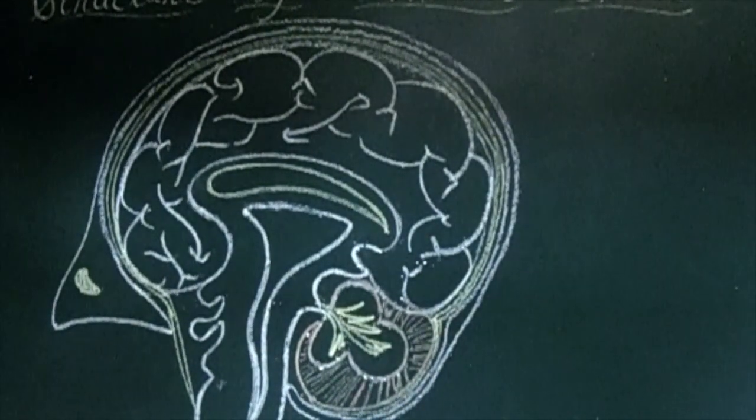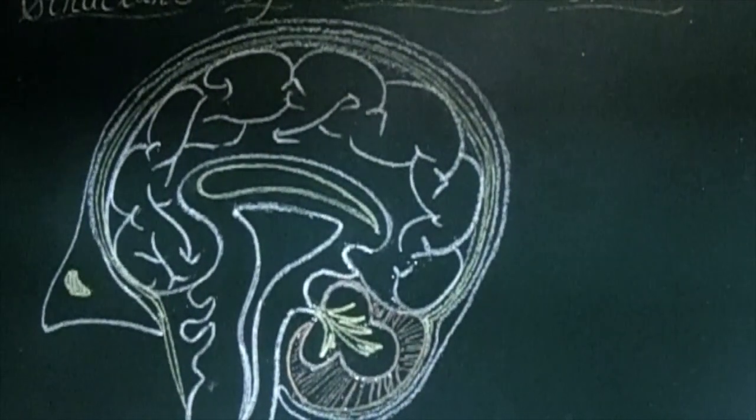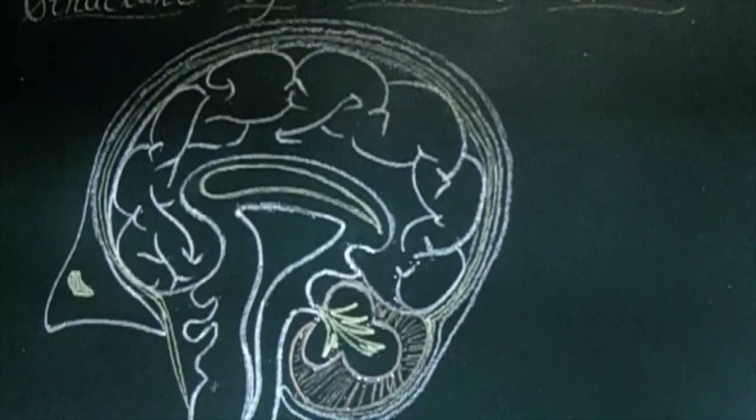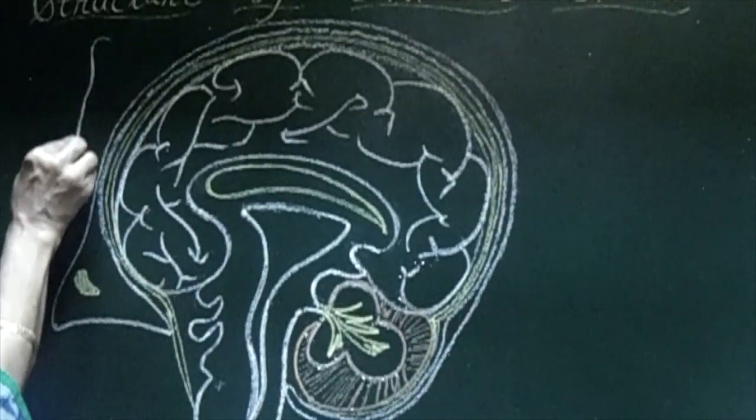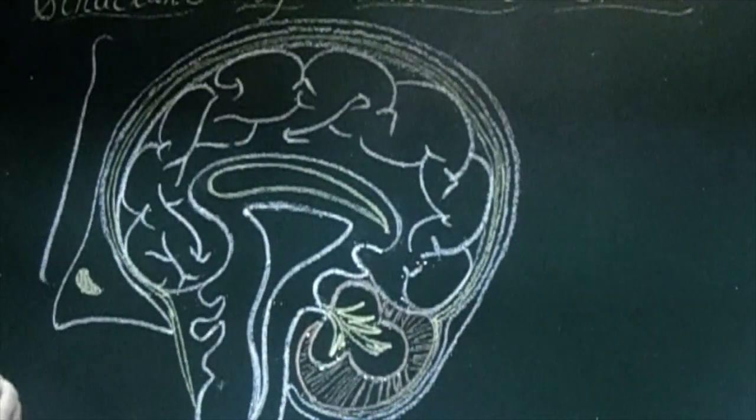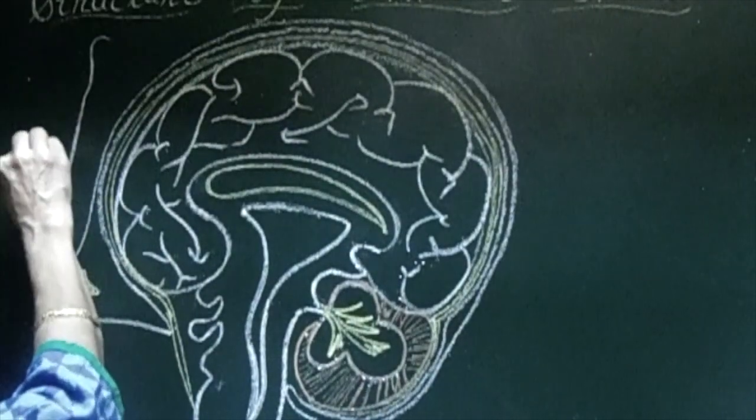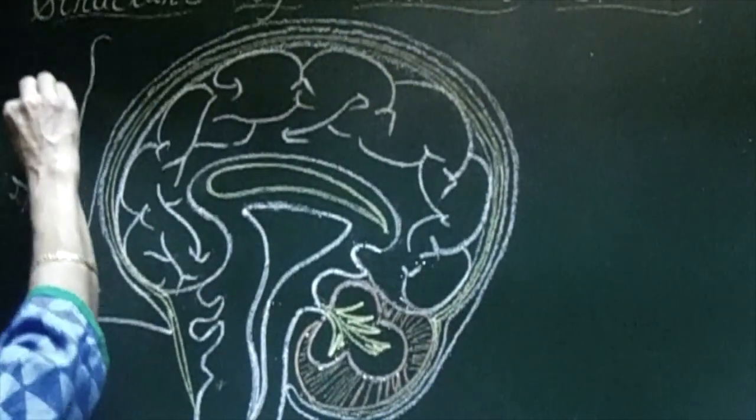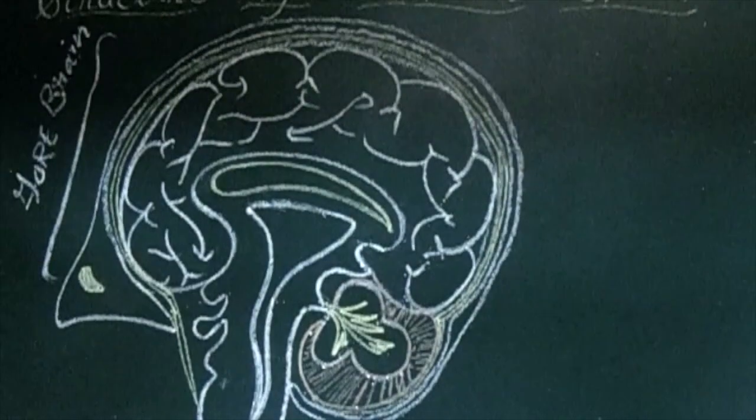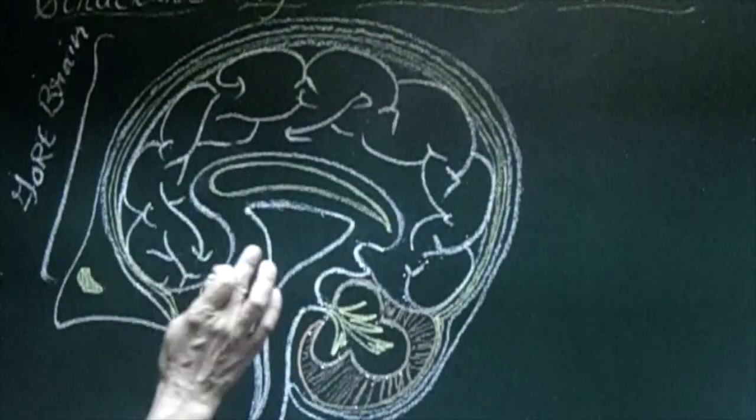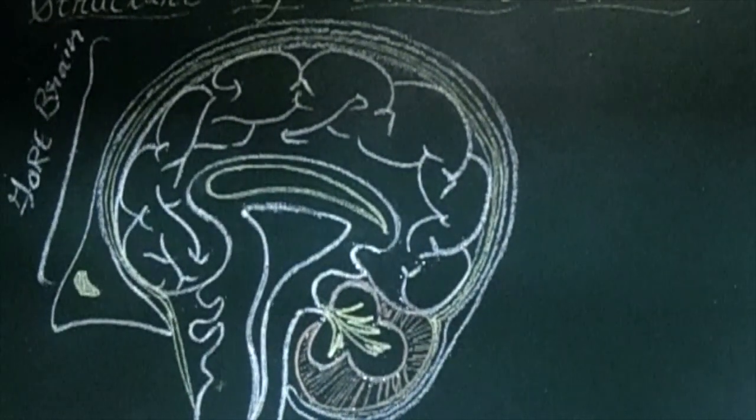This is how you have to draw brain. Now let us see the way to label it. As we know that brain has three parts, we talk about the forebrain. Now the forebrain comes from this region to this region. The forebrain consists of two parts, first one we call it as cerebrum.